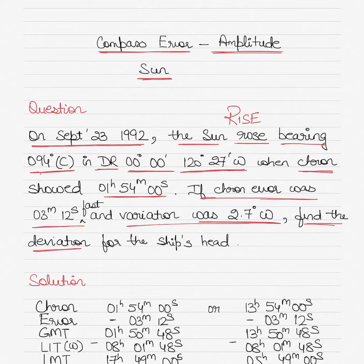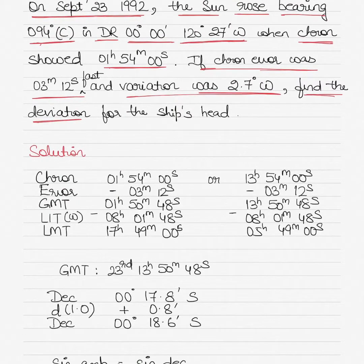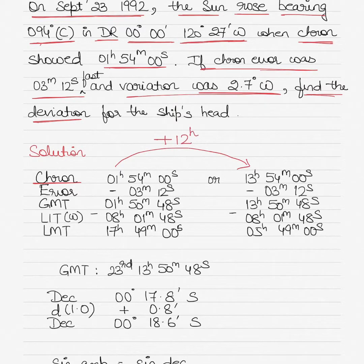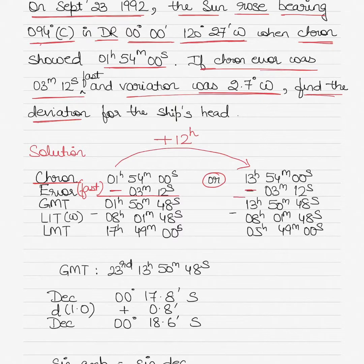First, resolve the chronometer time ambiguity to find the correct GMT. The chronometer time of 1 hour 54 minutes 00 seconds could be 1 AM or 1 PM, so add 12 hours to get a second possibility: 13 hours 54 minutes 00 seconds. Since the error is 3 minutes 12 seconds fast, subtract it from both cases, giving two possible GMT times: 01h 50m 48s and 13h 50m 48s.